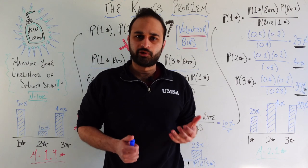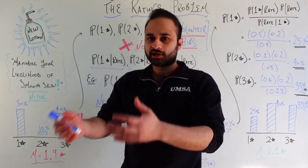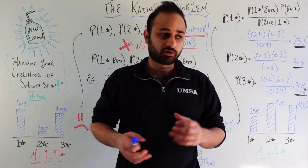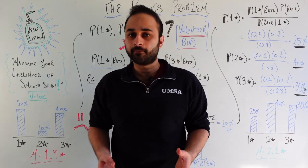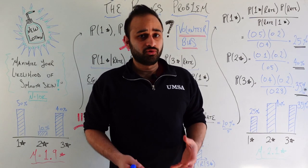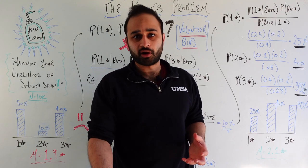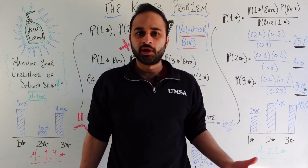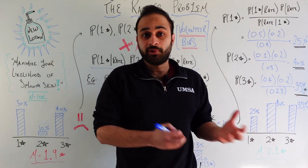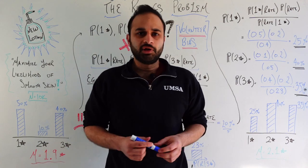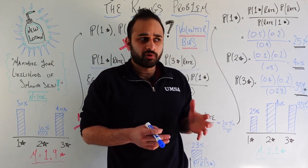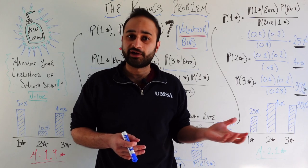There is this weird problem in ratings data, where the ratings that are coming in for a particular product or a restaurant or whatever it is that you're rating, might give you a very skewed view of the true ratings of that product for the general population. This video is really born out of this problem that I found pretty interesting, and hopefully you find interesting as well.